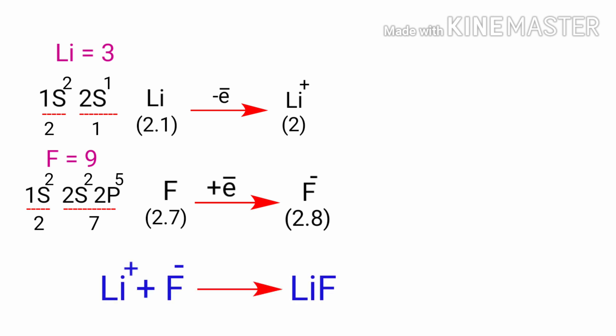In this example, lithium will donate its one electron to empty its shell and Fluorine will accept that electron to fill its shell. Both ions now have complete outermost shells. These transactions can normally take place simultaneously.